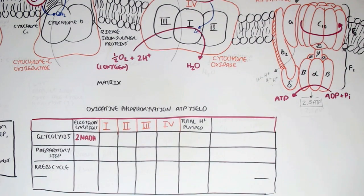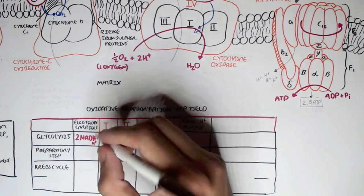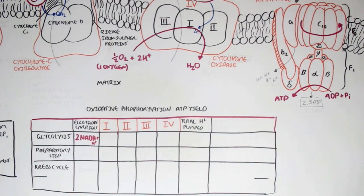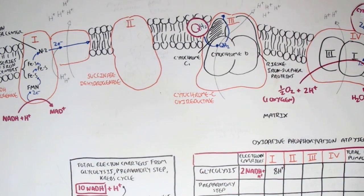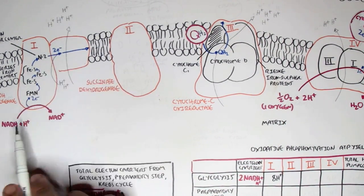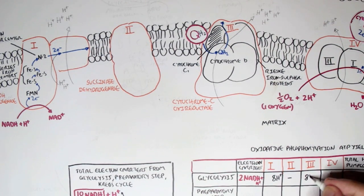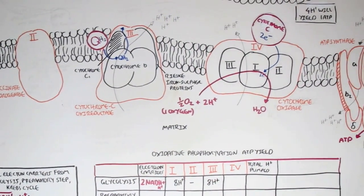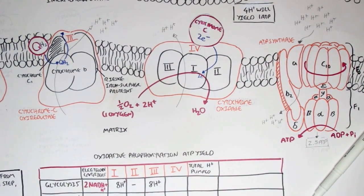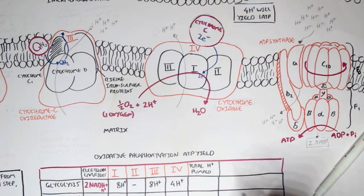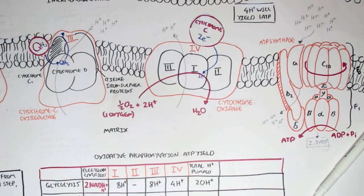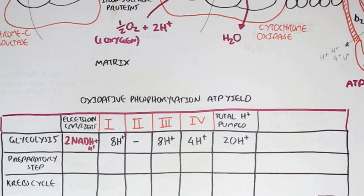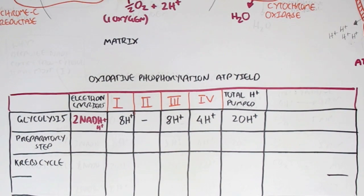If NADH, the electron carrier, is in complex I, complex I will pump out a total of eight hydrogen ions from the matrix into the intermembrane space, because for one NADH it's four. For complex II, nothing is pumped out. Complex III, four hydrogen ions get pumped into the intermembrane space for each NADH, so because it's two, it gives us eight hydrogen ions. And then for complex IV, two hydrogen ions are pumped for each NADH, so four hydrogen ions. The total hydrogen ions pumped by two NADH molecules from all the complexes equates to 20 hydrogen ions.